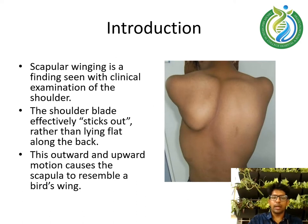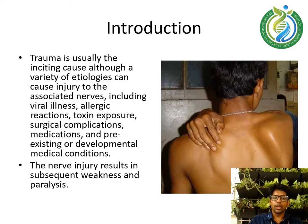Introduction. Scapular winging is a finding seen with clinical examination of the shoulder. The shoulder blade effectively sticks out rather than lying flat along the back. This outward and upward motion causes the scapula to resemble a bird's wing.